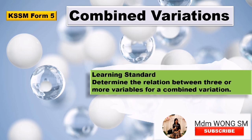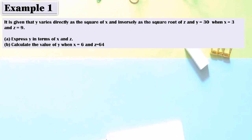In video 1 you learned about direct variation, in video 2 joint variation, and in video 3 inverse variation. For this video we are going to learn how to determine the relation between three or more variables for a combined variation. Combined variation is a variation that combines direct variation and inverse variation.